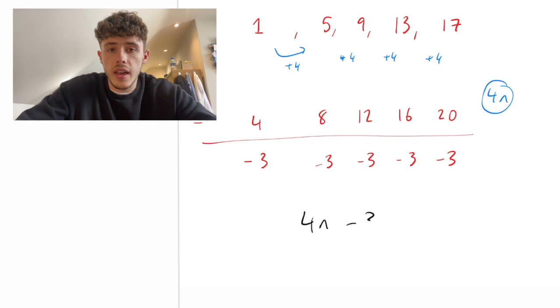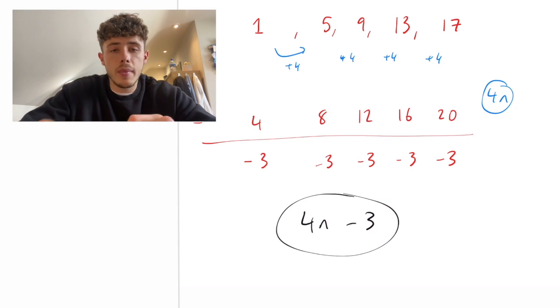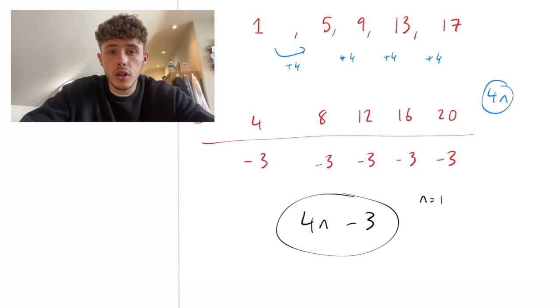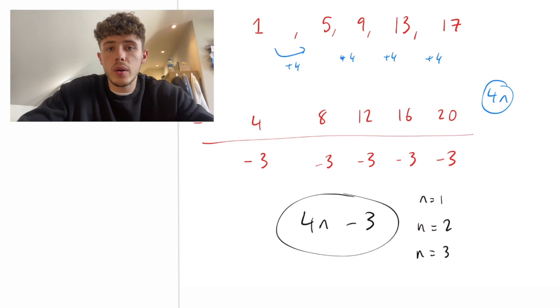Now this is an answer you could get, and if you have an extra minute or two spare in your exam, you can go through and double check that you've got the right answer. So for example, with nth term, if you want to rebuild that sequence using the nth term you've just worked out, all you have to do is substitute the numbers 1, 2 and 3 for the n. So if we have 4n minus 3, and we substitute a 1 in there, we're going to get 4 minus 3, which is 1.